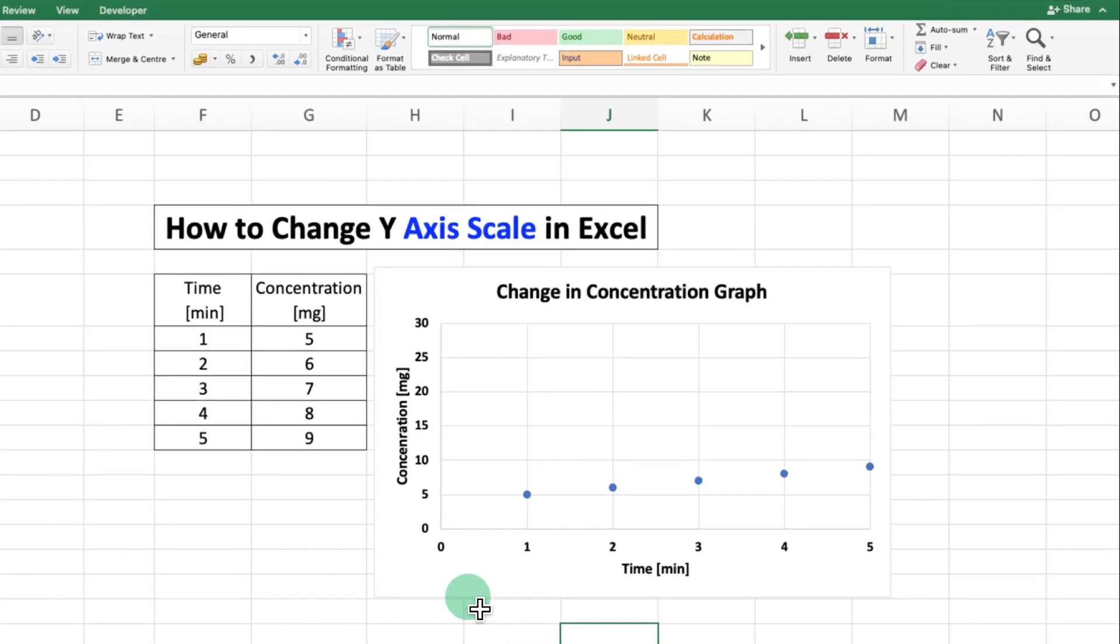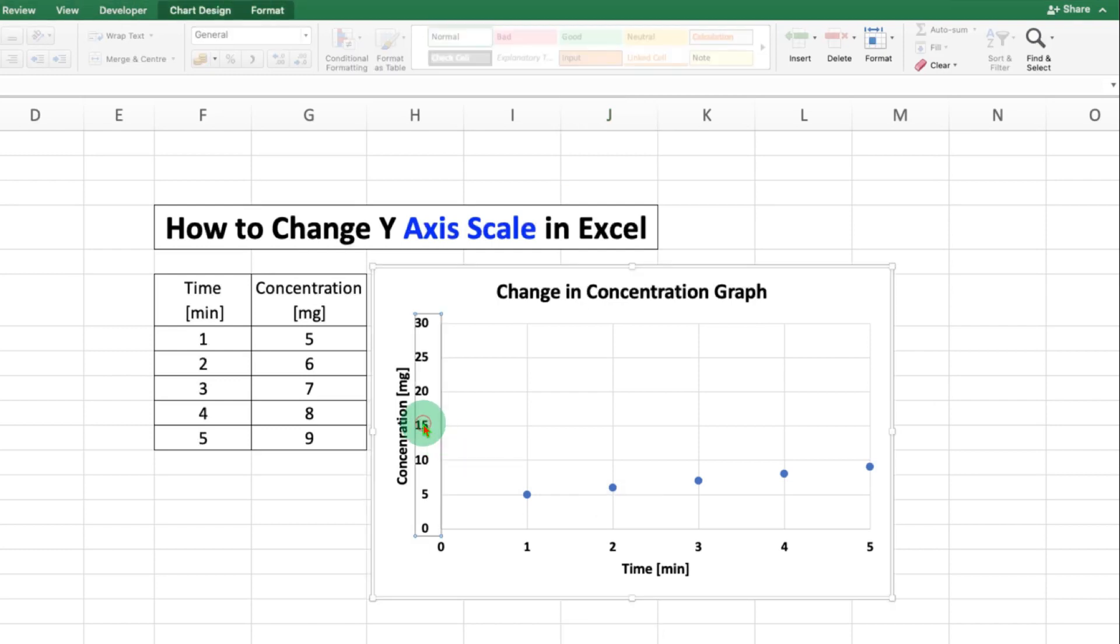In this video you will see how to change y-axis scale in Excel to increase the readability of your graph. To change y-axis scale, click on the y-axis numbers to select them, then right-click and go to format axis.